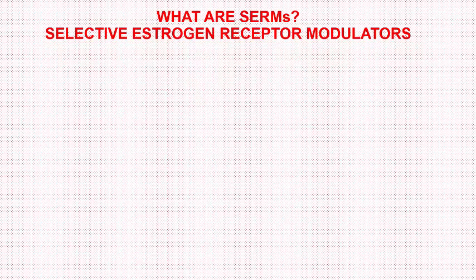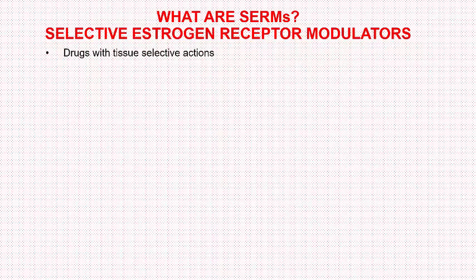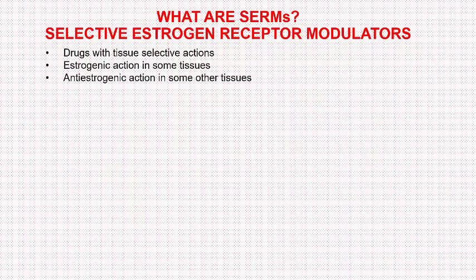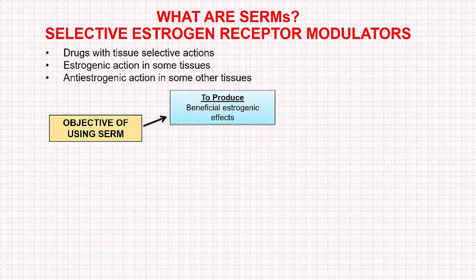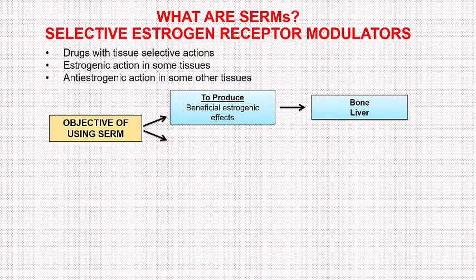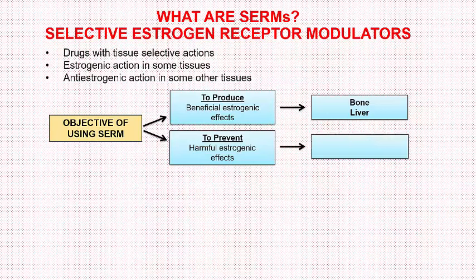Today we will talk about Selective Oestrogen Receptor Modulators, or SERMs. By the term SERM, it means that these are drugs with tissue-selective actions — they have oestrogenic action in some tissues and anti-oestrogenic action in others. The main objective of using these drugs is to produce beneficial oestrogenic effects in some tissues such as the bone and the liver, and to prevent harmful oestrogenic effects in tissues such as the breast.